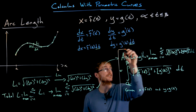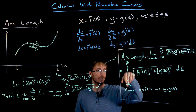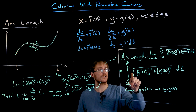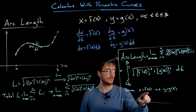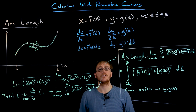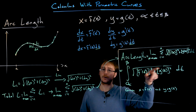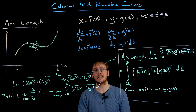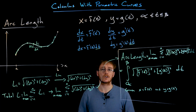Now we're taking the limit of a Riemann sum, which turns into a definite integral from alpha to beta of the square root of F prime of T squared plus G prime of T squared, dt. We have finished deriving our arc length formula for parametric curves. The integrand is always the square root of the sum of the squares of the derivatives of our parametric equations. Because these integrals involve square roots, they can be very difficult to compute and may require a calculator or approximation method.